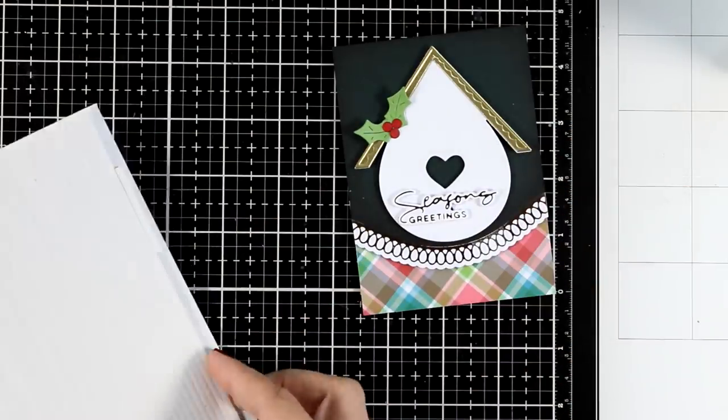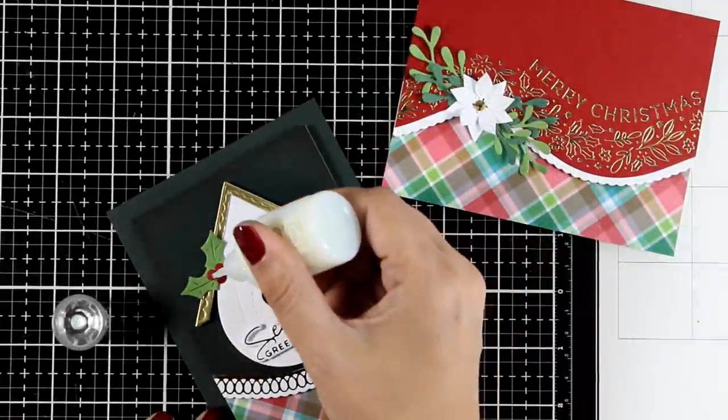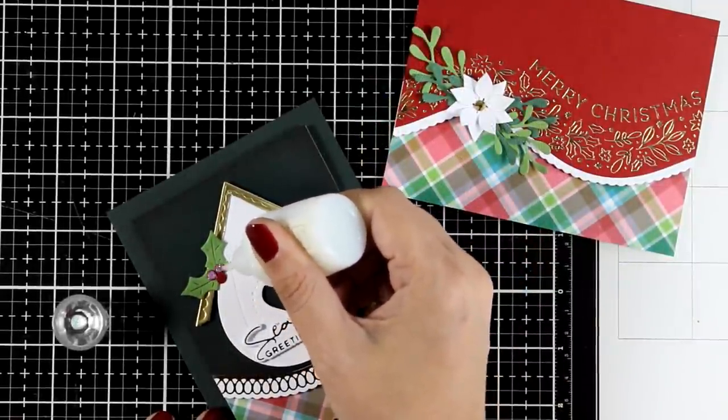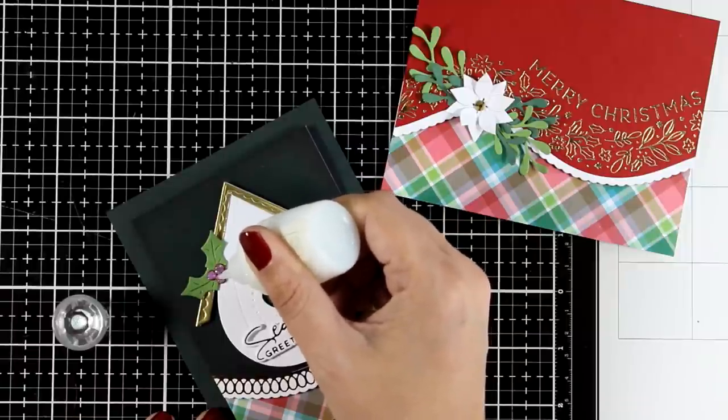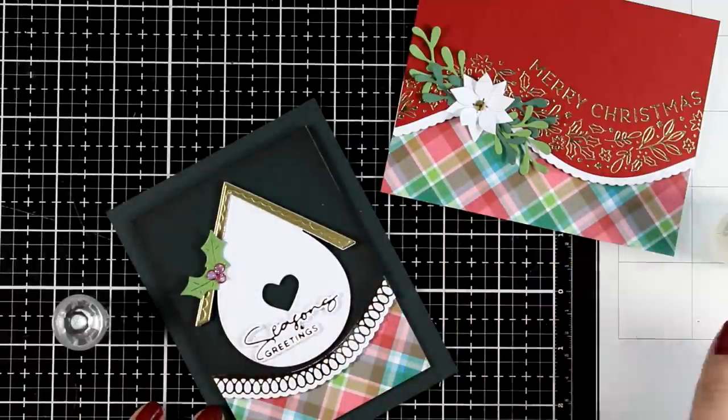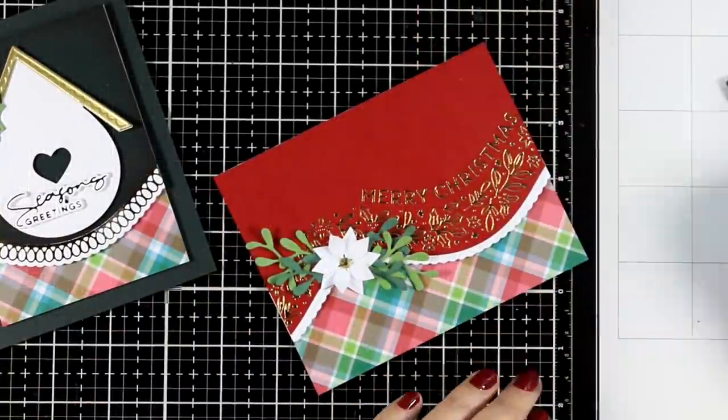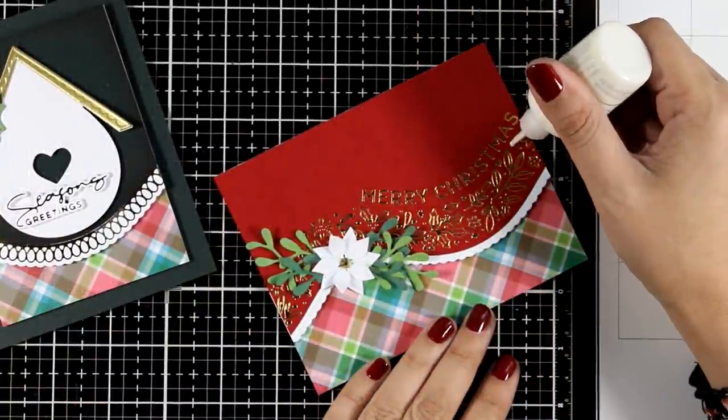And here are both the cards that I made for today. I'm going to finish them off with nouveau drops, this is usually a step that I leave for the end so that I don't make a mess and touch them by accident. I did add glitter on the berries and on this card I'm adding some dots here and there.